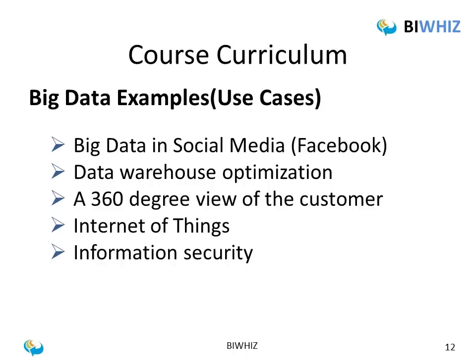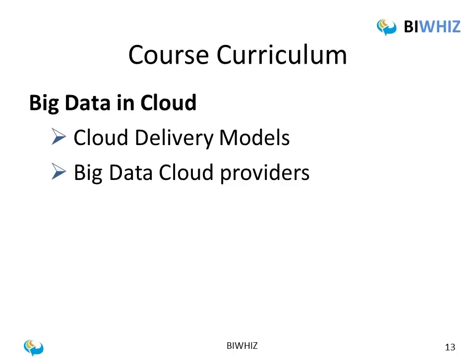Then we will talk about Big Data in the cloud. We will cover different cloud delivery models — such as software as a service and platform as a service — and then discuss companies providing Big Data processing power through the cloud. One such company is Amazon, which has an entire Big Data processing infrastructure that you can buy on the cloud and run your Big Data processing on. We will cover major infrastructure providers where you can deploy and process your Big Data.